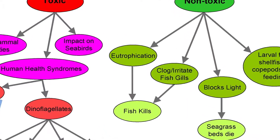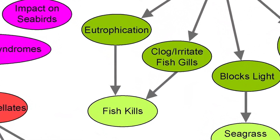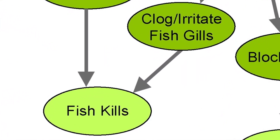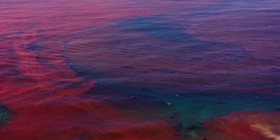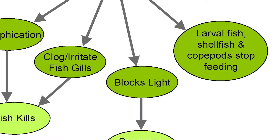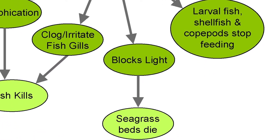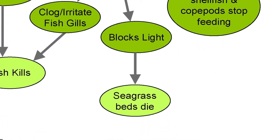HABs can also cause fish kills by clogging or irritating their gills. Other algae can take over the water surface, casting a shadow on the life below and preventing access to valuable sunlight for plants like seagrass.